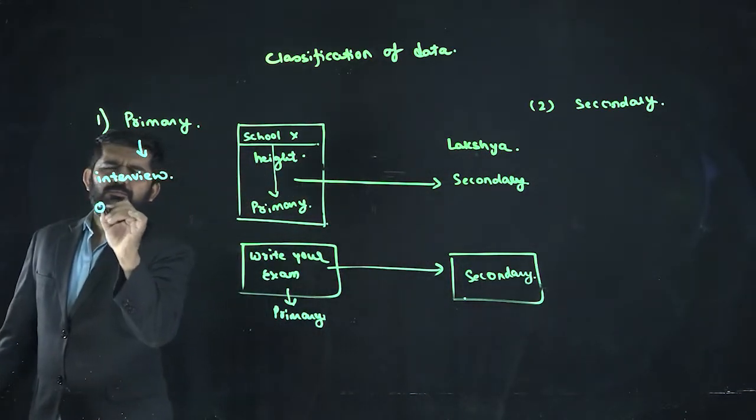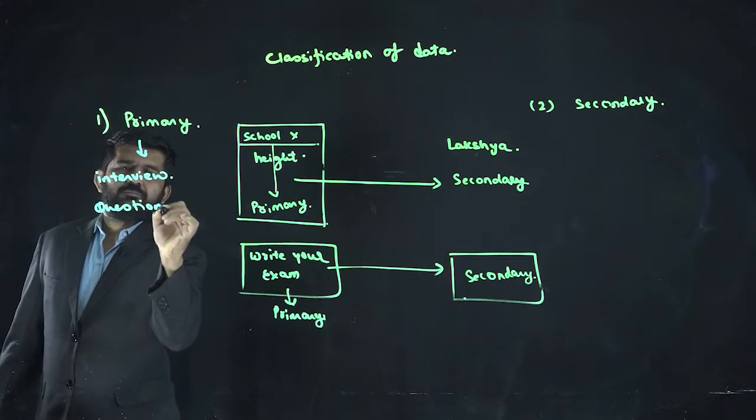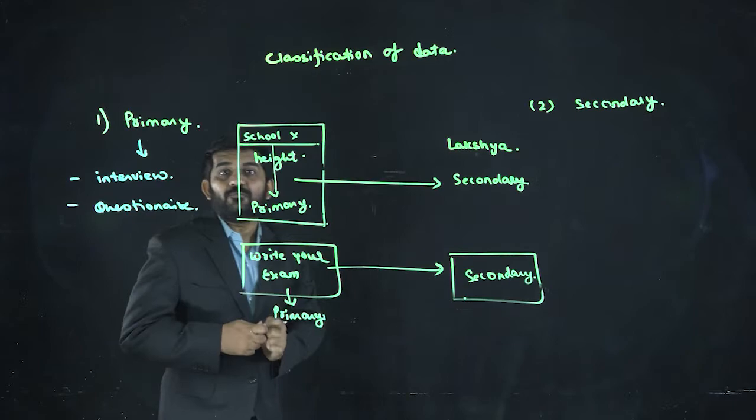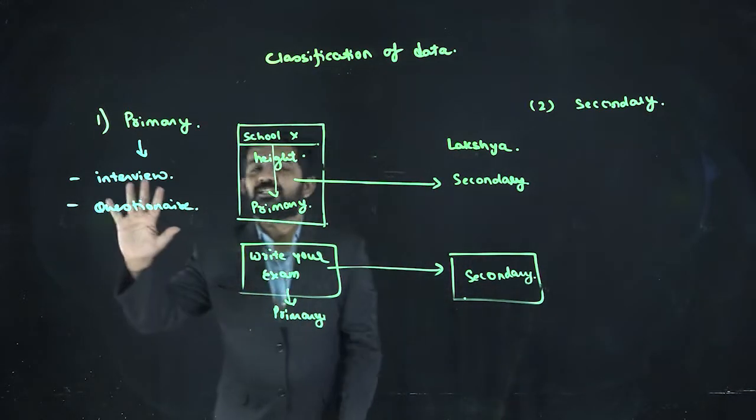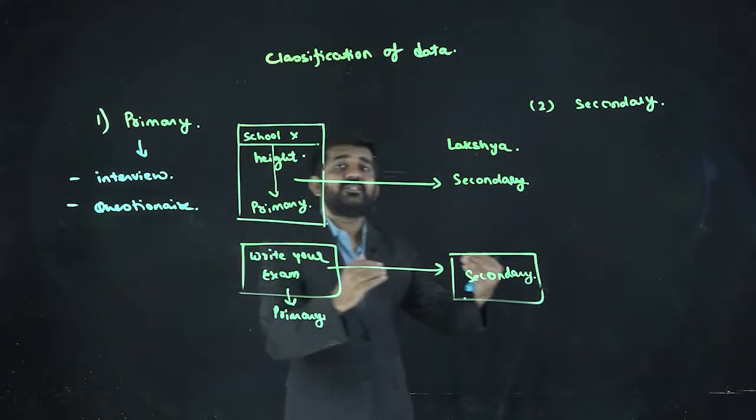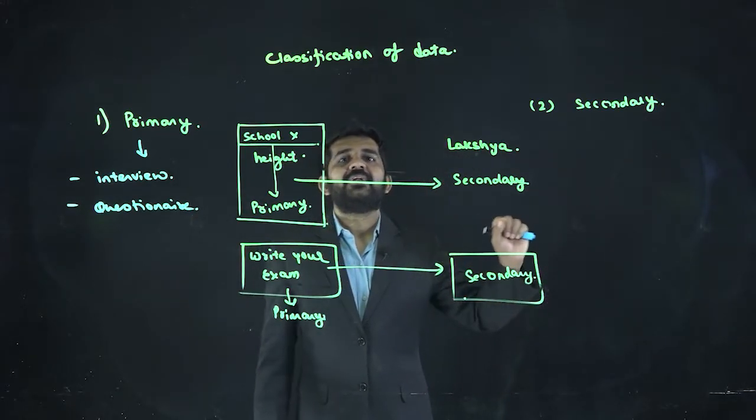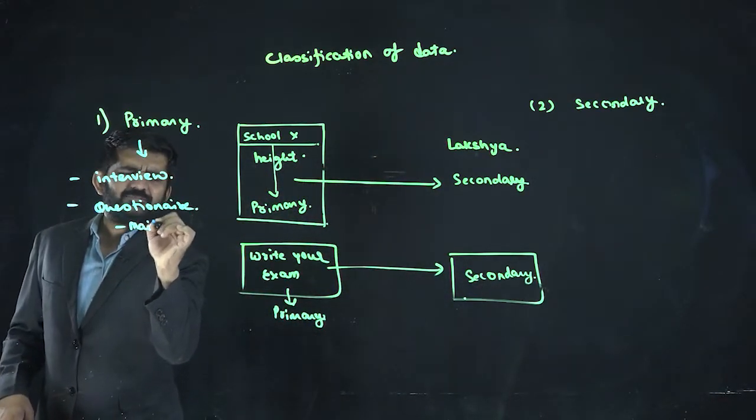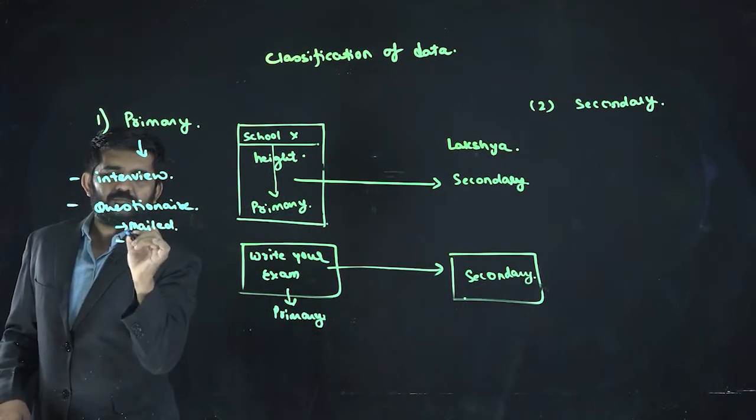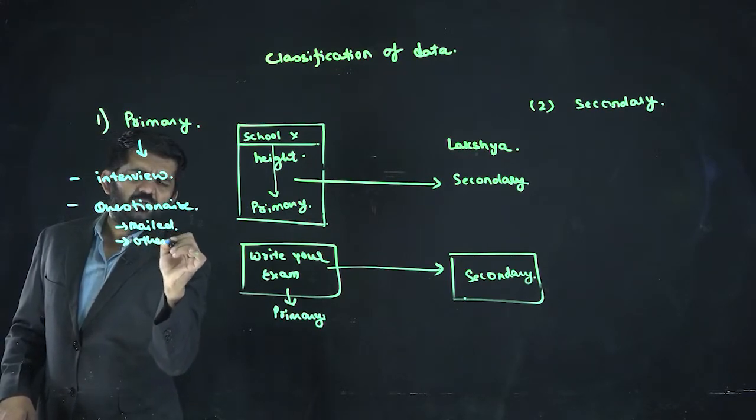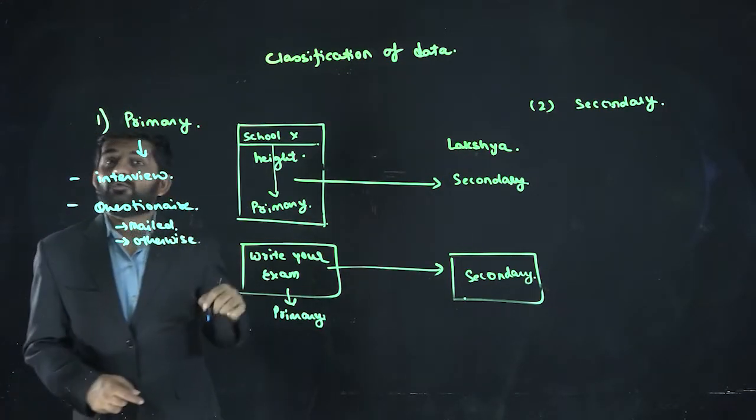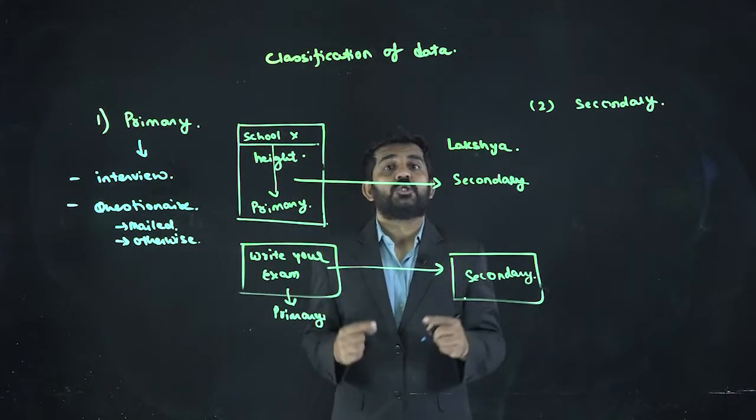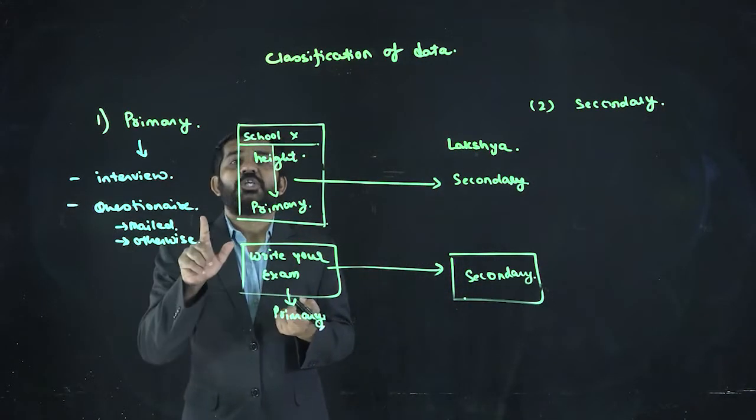Number two is questionnaire. You have got your Google forms while taking admission in lectures. That is nothing but questionnaires. I will write some questions, give it to you. You will write down the answers and ultimately give it back to me. It can be a printed copy, I can mail you, I can do email, I can provide you in WhatsApp, I can provide you in Google forms also. It is a questionnaire method.